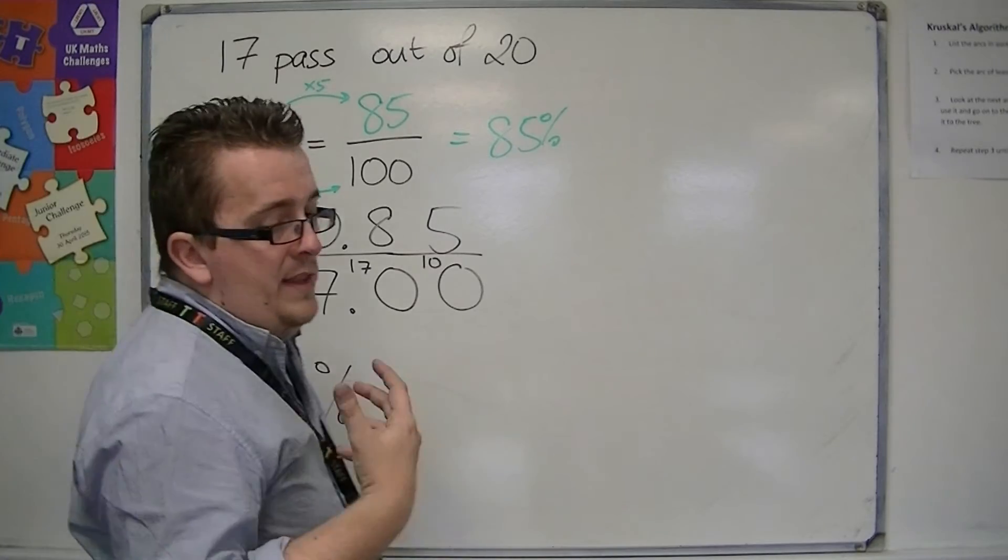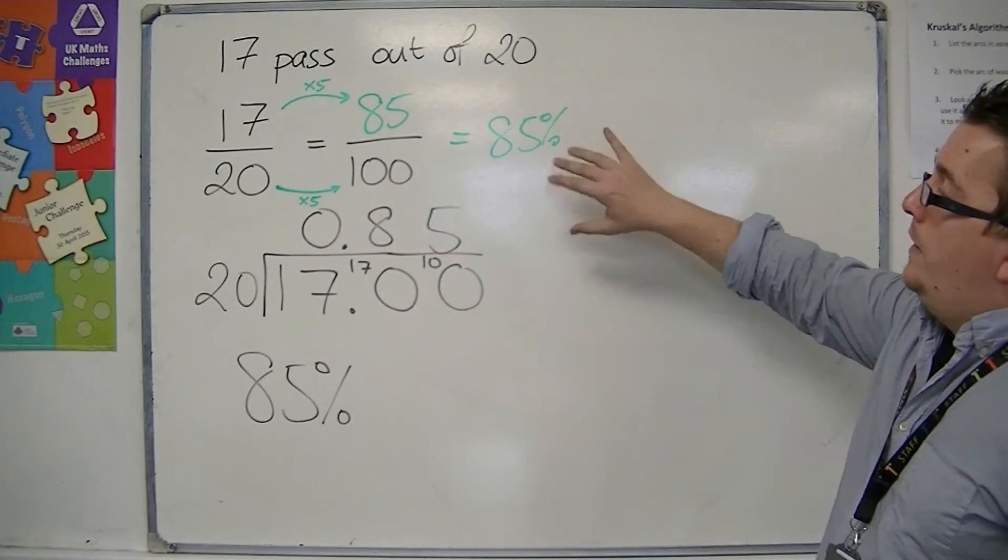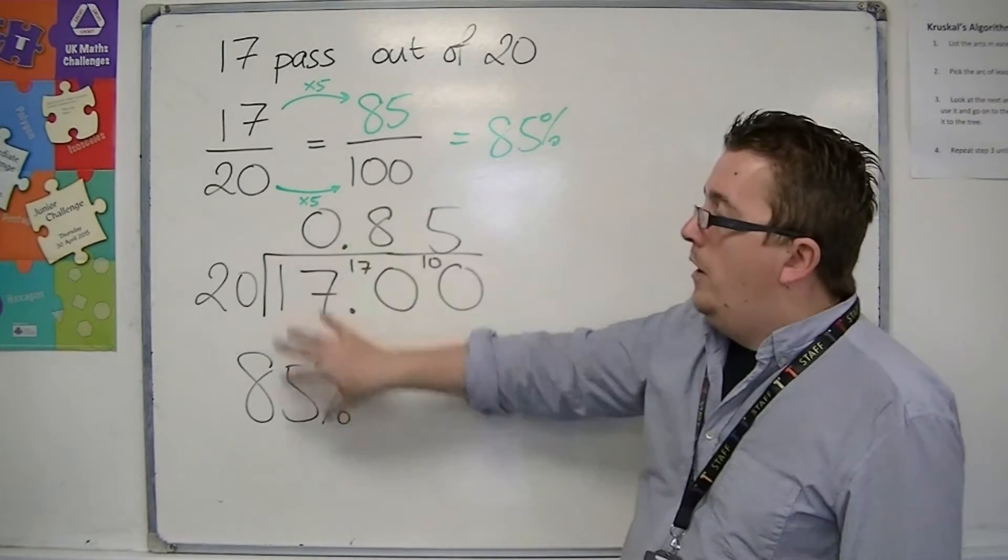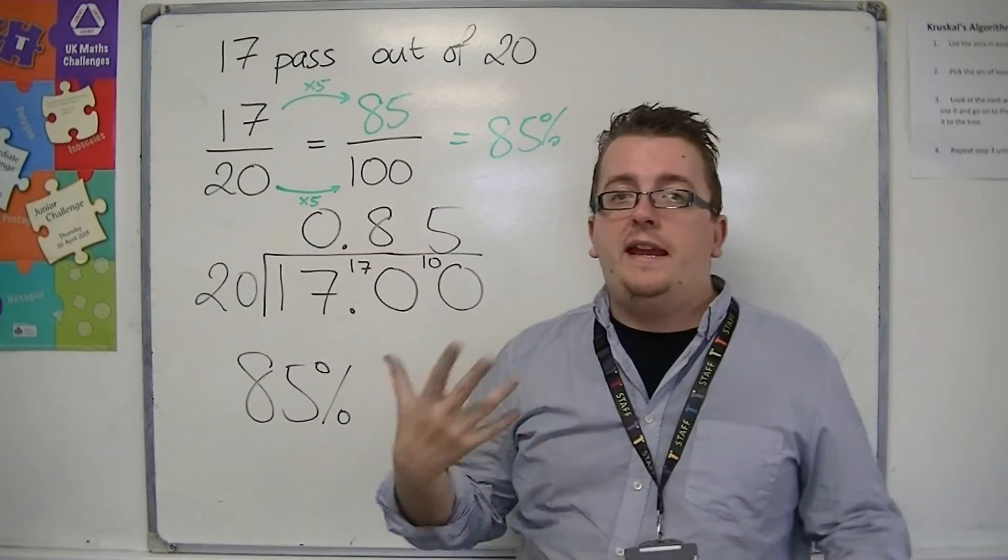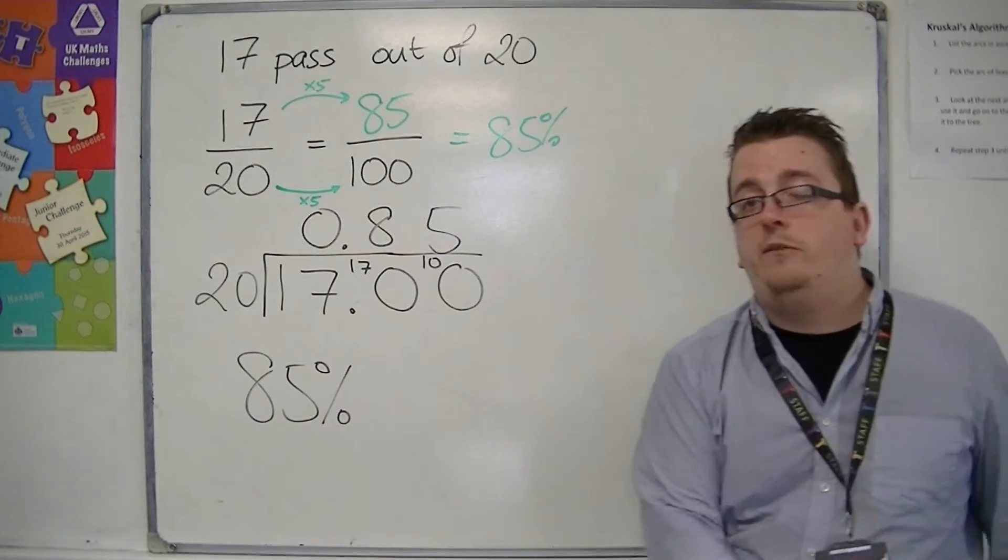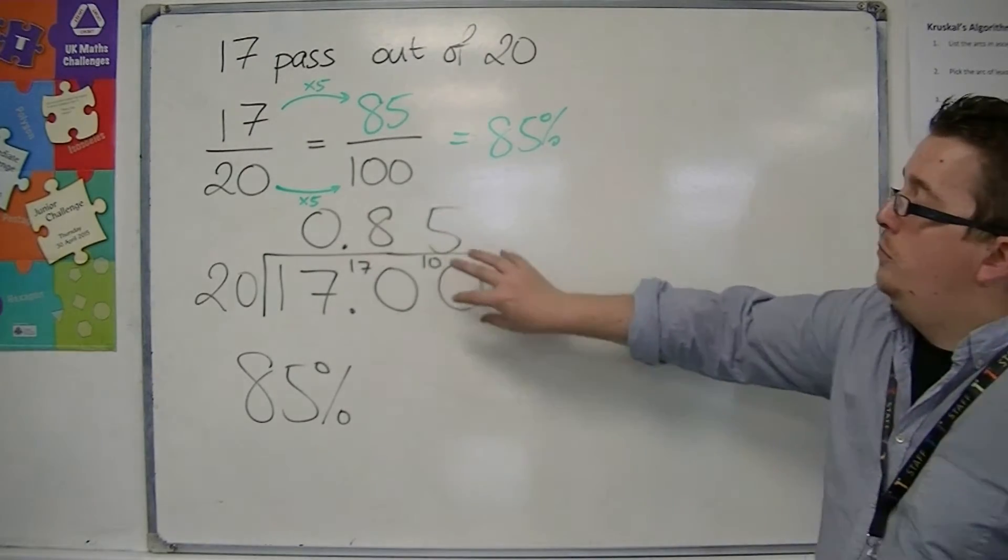So in that way we've shown that you could do it either way. Obviously this method only works if that denominator is a number that could be easily multiplied to get to 100. But this method will work every time.